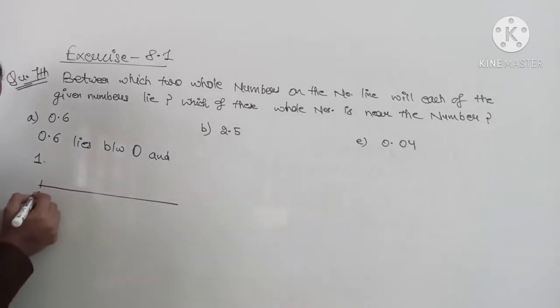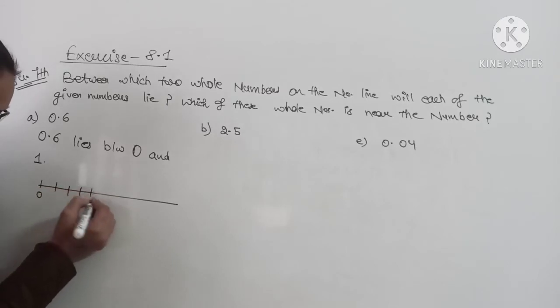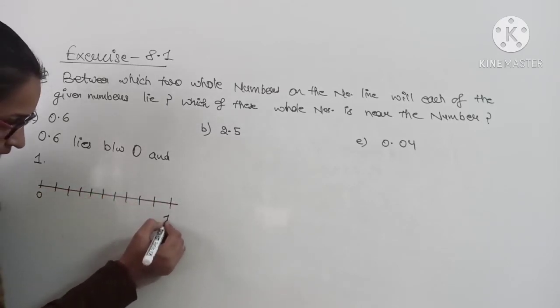There is 0.6. Start at 0. Then we have to take 10 divisions: 1, 2, 3, 4, 5, 6, 7, 8, 9, 10.